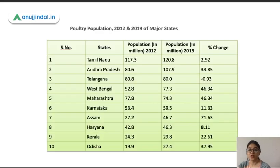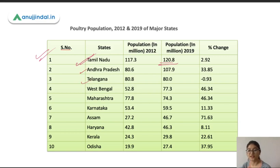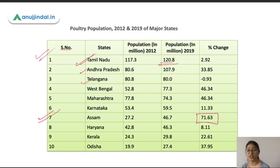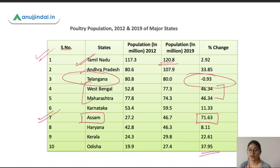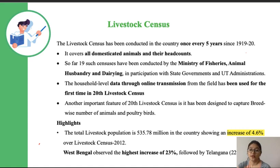This is the table of the total poultry population. Tamil Nadu has the maximum share, contributing around 120.8 million poultry, followed by Andhra Pradesh and then Telangana. If we look at maximum increment, Assam has shown the maximum increment in poultry population, followed by West Bengal and Maharashtra. If we look at decline, Telangana has shown a decline of 0.93 percent — although it still ranks third in total poultry population.